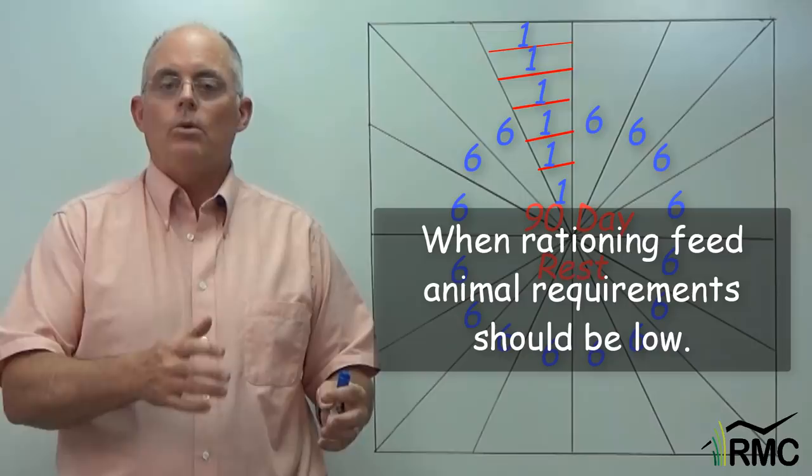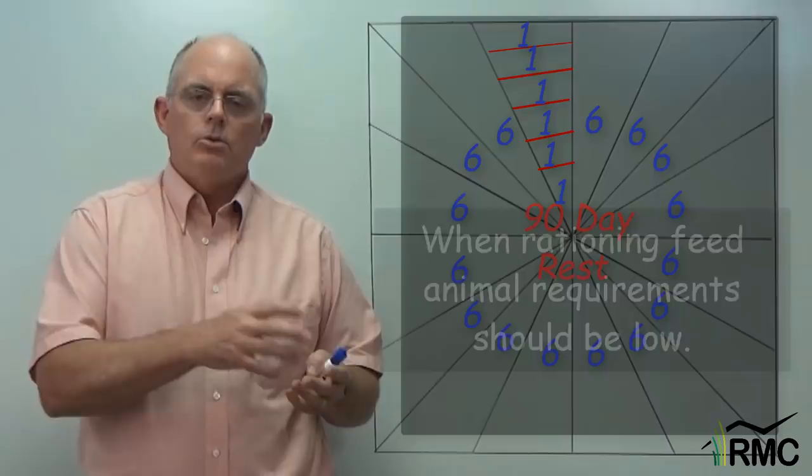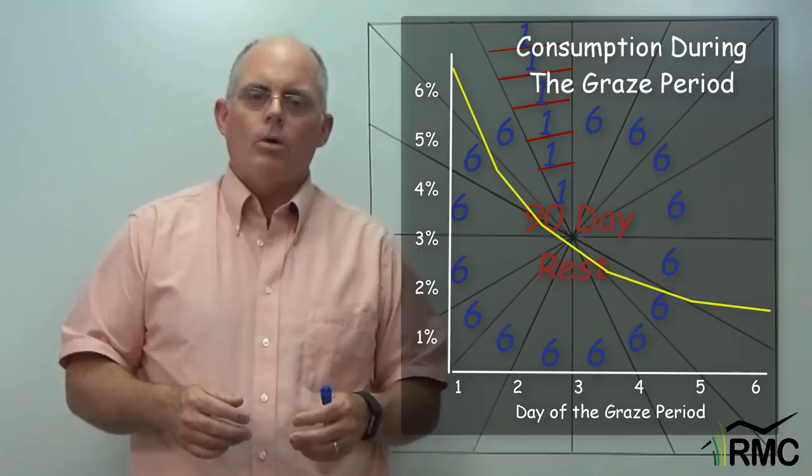You've probably heard the rule of thumb that a cow will eat 2-3% of her body weight on a dry matter basis. Well, you know what? She'll eat a lot more if you let her. I'm sure on the day that he moves them into this fresh feed, they're eating something like 5 or even 6% of their body weight.